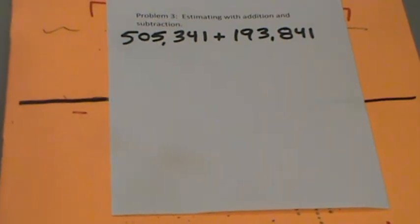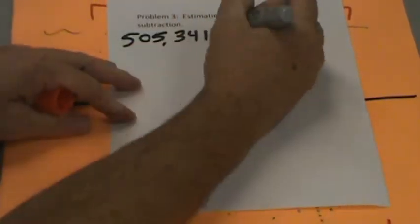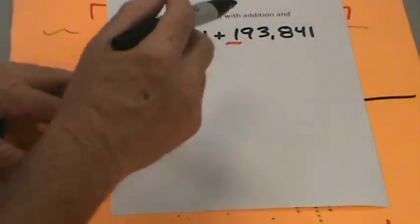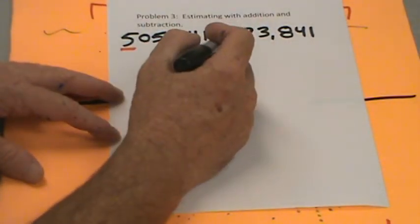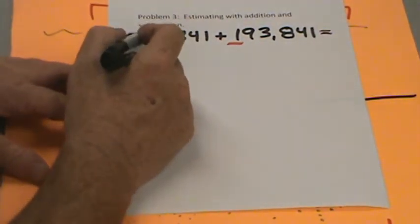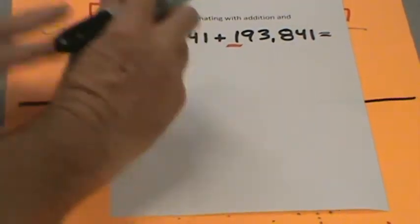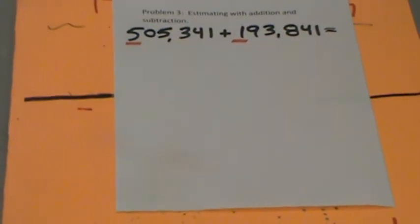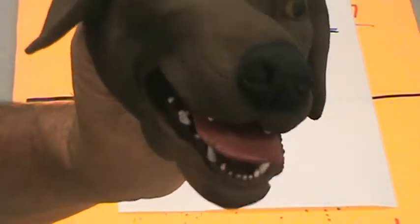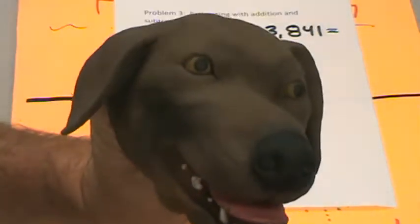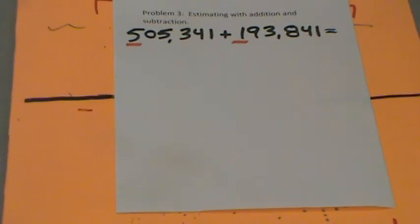Rounding to the nearest hundred thousand — so this first number will either stay a five hundred thousand or become six hundred thousand, and the second will either stay at one hundred thousand or become two hundred thousand. Let's just work on this in our heads. Math Mutt says he really likes those vertical number lines — we'll get to more vertical number lines during the problem set.